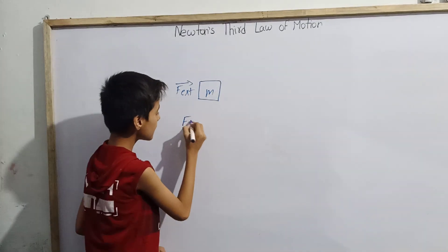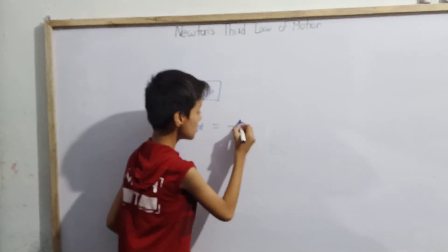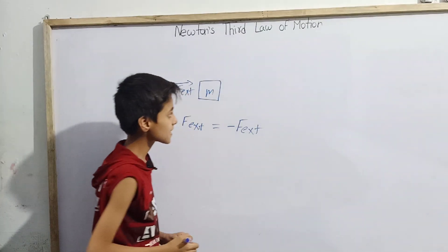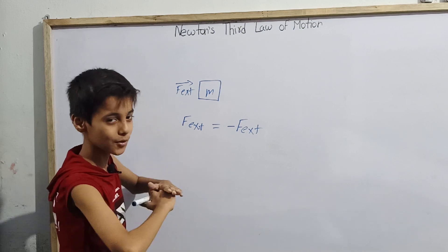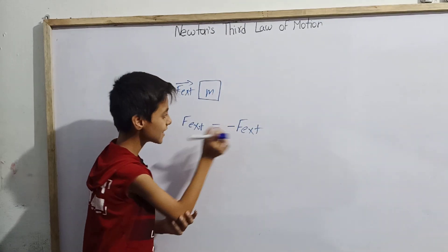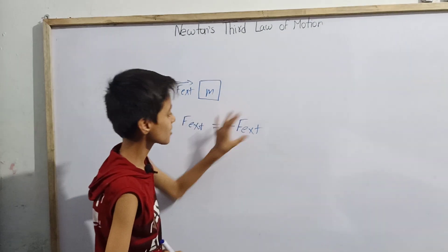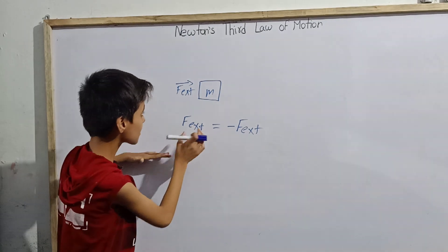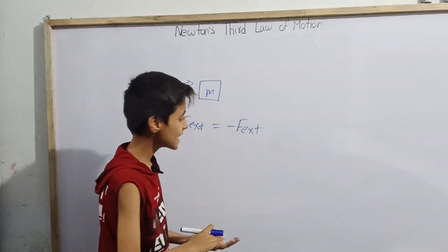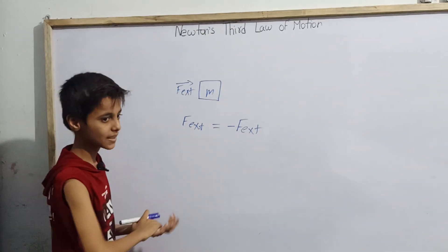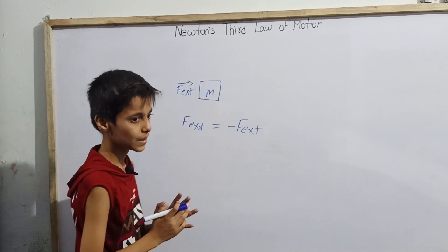So we can say that F external exerted by the man equals minus of F external exerted by the block. The minus indicates that the direction will be opposite. So the force exerted by the man over the block equals minus of the external force exerted by the block on the man — magnitude will be the same but direction should be opposite. This is the statement of the third law of motion.